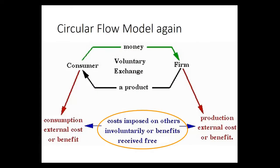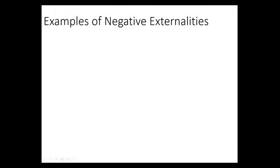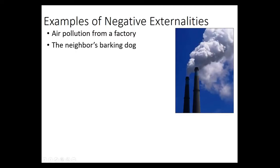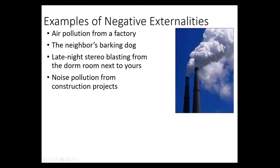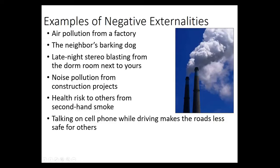Back to the circular flow: consumers are paying money for a product, but there's some other cost that's not being internalized by the firm or the consumer. Some other examples: air pollution, barking dog, late-night stereo, construction projects. Cities will enact rules about when you can jackhammer a road or run construction projects. There's also secondhand smoke and texting while driving, which is the focus of a lot of attention.